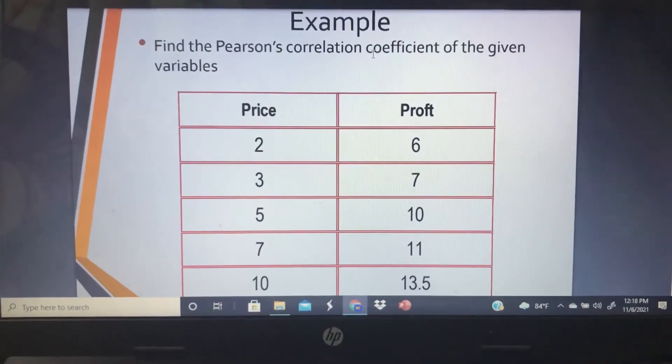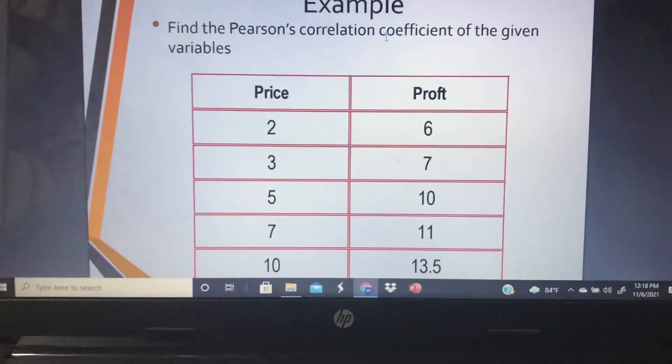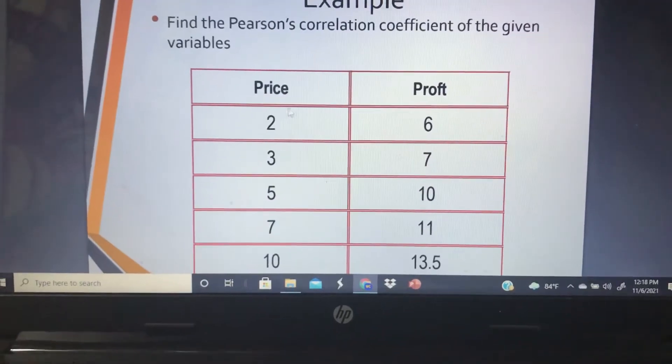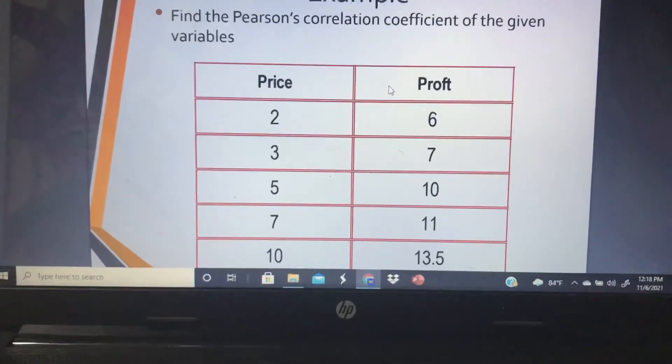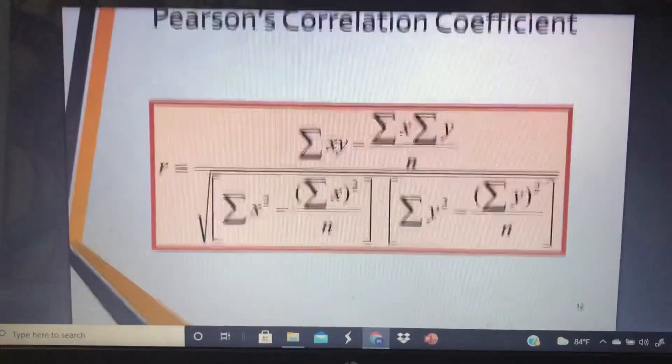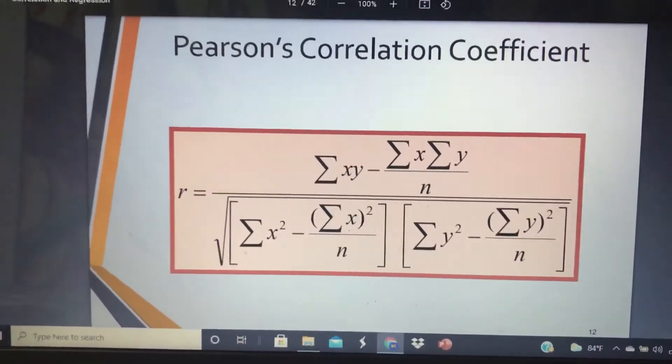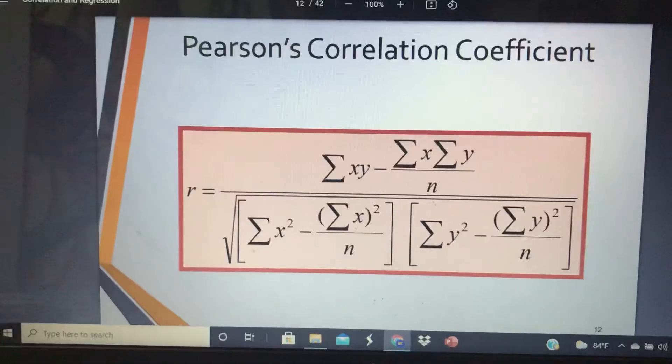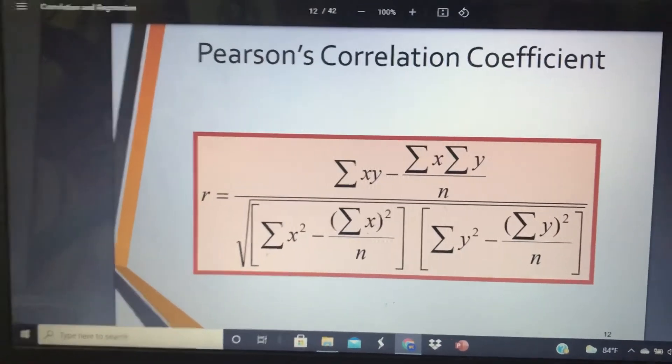In this example, it says find the Pearson correlation coefficient of the given variables. Here, price is the predictor variable and profit is the response variable. We denote correlation coefficient by simple R. Using this formula, you can calculate correlation.